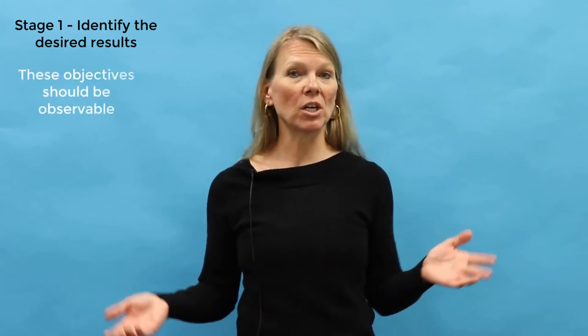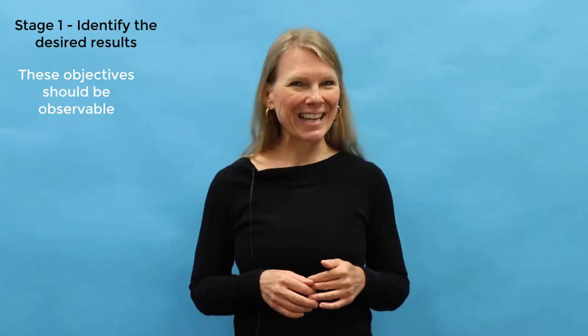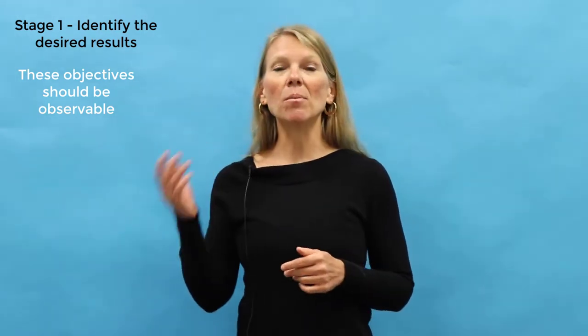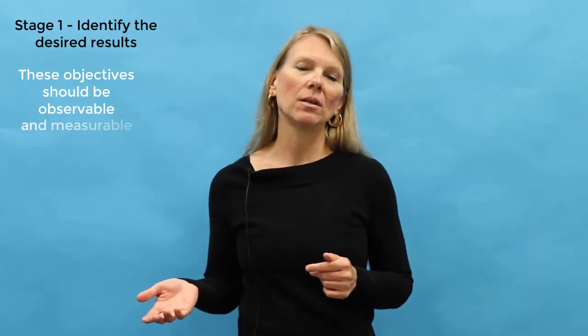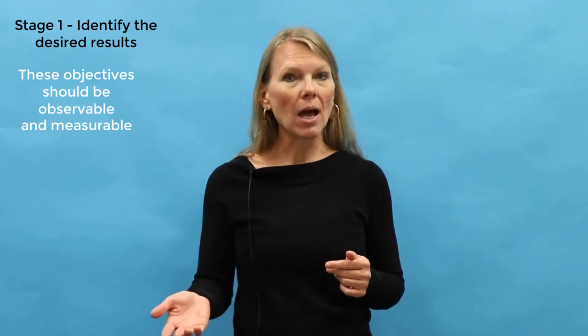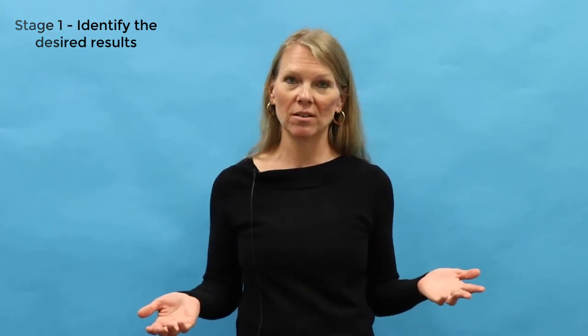These objectives should be observable, meaning they can be seen in some way, and measurable, meaning you can gather data about how much students did or did not meet course objectives. After you identify desired results, you can determine acceptable evidence — that is the second stage.